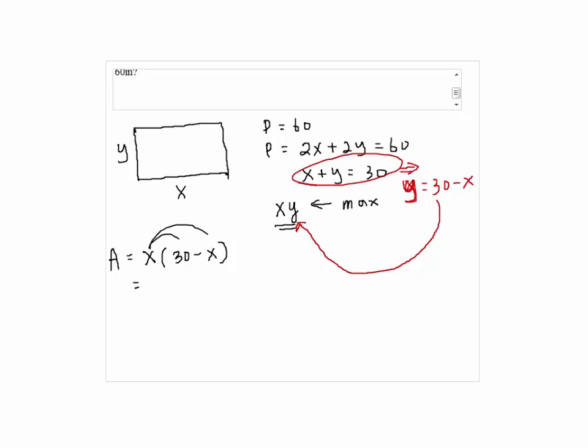By distributing, we have 30x minus x squared. By arranging the polynomial, you get negative x squared plus 30x.